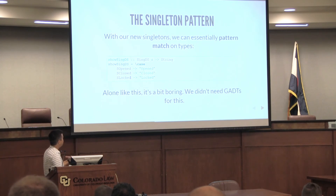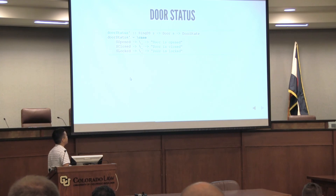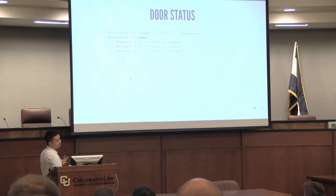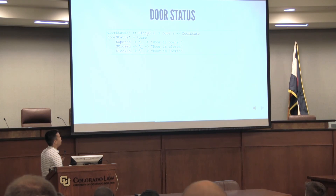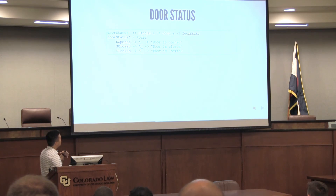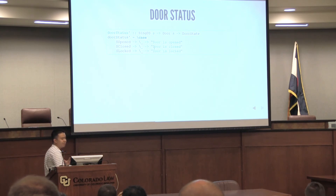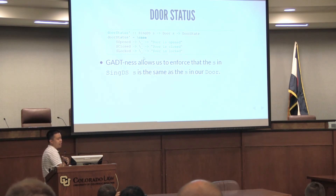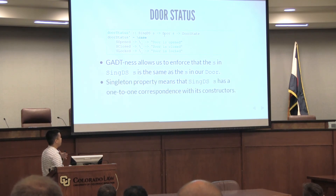This is a boring example because we can do this without GADTs. But let's look at a more practical example, which is what we had earlier. Let's write doorStatus for real. DoorStatus will take a witness runtime singleton of its type, and we can branch based on that. So if a door is closed, there's only one Sing that can go in here — you can only pass in SClosed. If a door is opened, we can only pass in SOpened. If a door is locked, we can only pass in SLocked. There's only one value of type Sing DoorState Locked, and that's SLocked. If we have a Door Open, we have to pass in SOpened. This lets us pattern match on the types. And because we have a GADT, we can enforce that the S's are the same between the door and the singleton.